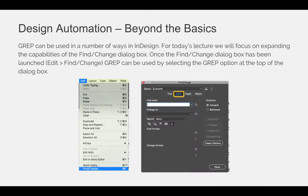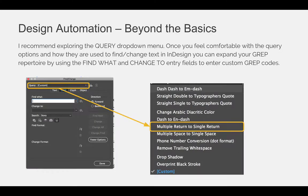GREP can be used in a number of ways in InDesign. For today's lecture, we will focus on expanding the capabilities of the Find/Change dialog box. Once the Find/Change dialog box has been launched — via the Edit menu, Find and Change — GREP can be used by selecting the GREP option at the top of the dialog box. I recommend exploring the Query drop-down menu. Once you feel comfortable with the query options, you can expand your GREP repertoire by using the Find What and Change To entry fields to enter custom GREP codes.